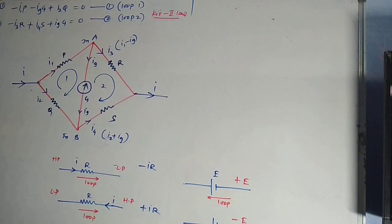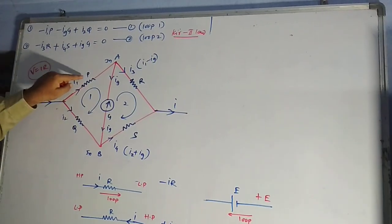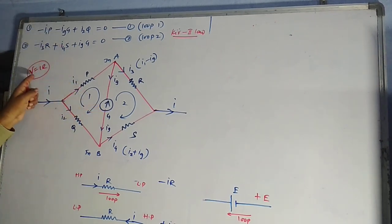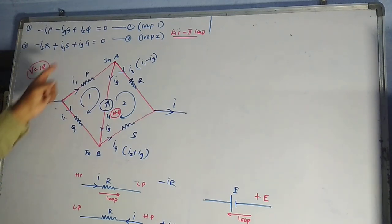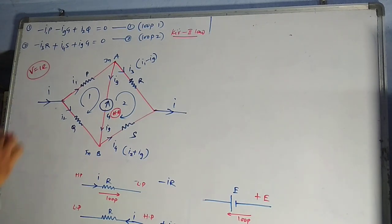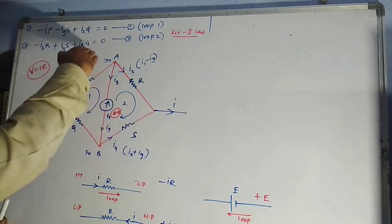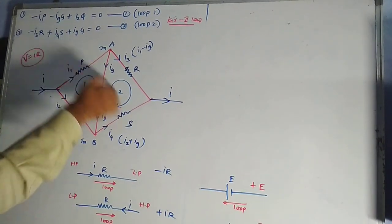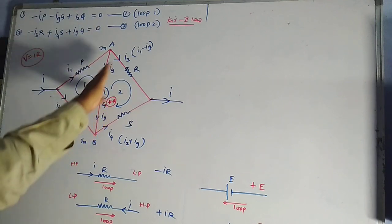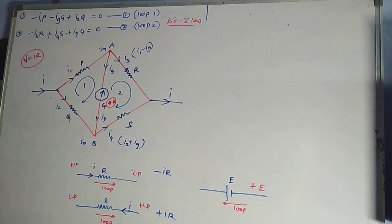For the second loop: loop and current in the same direction gives minus I3·R; loop and current opposite gives plus I4·S; and for the galvanometer branch, both are opposite, giving plus IG·G equals zero. This is the second KVL equation. Potential drop is V equals I·R by Ohm's law — that is why I write I1·P, IG·G, etc. These two equations come from Kirchhoff's second law applied to each loop.